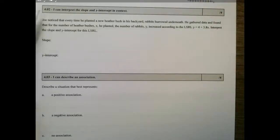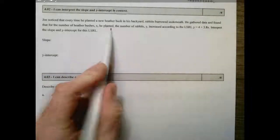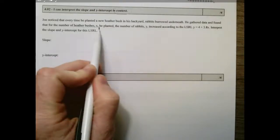Alright, so this standard is: I can interpret the slope and y-intercept in context. In context, that's important. Joe noticed that every time he planted a new heather bush in his backyard, rabbits burrowed underneath. He gathered data and found that for the number of heather bushes x he planted – so x is heather bushes – I'm going to go ahead and draw a graph.